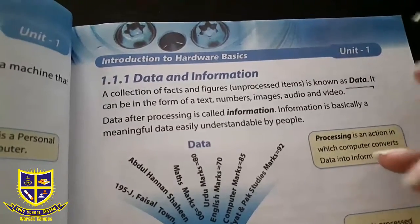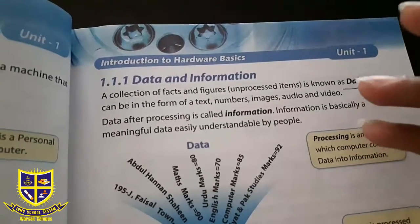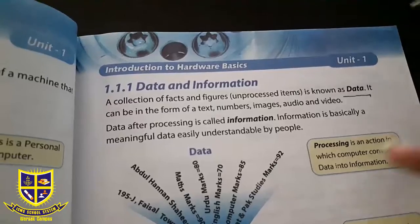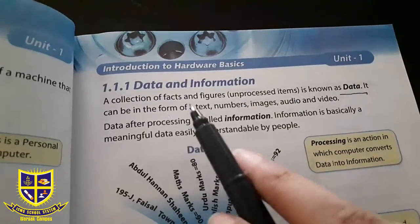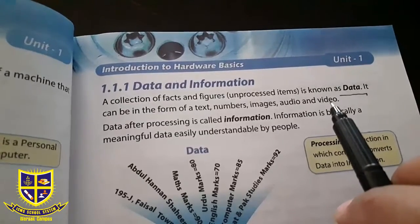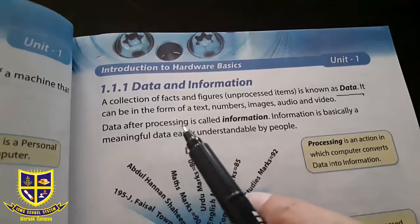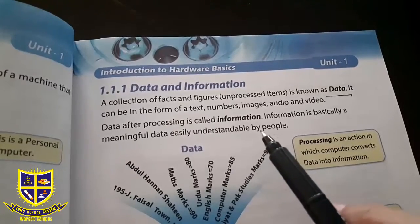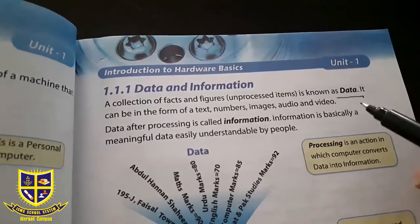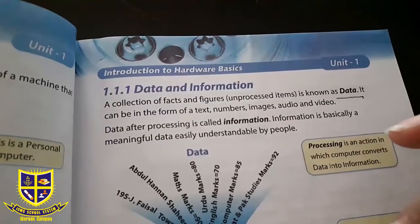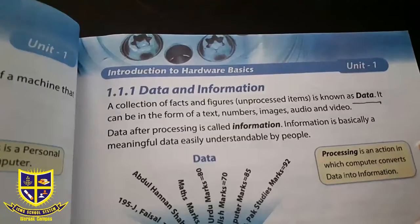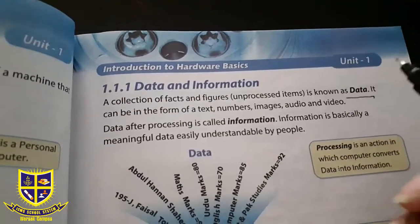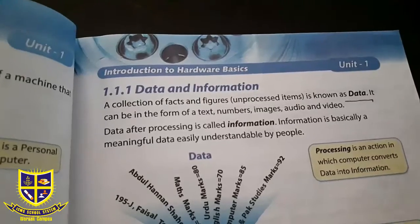Data is an unprocessed item — जिस पर कोई भी काम नहीं हुआ हो, जो process में नहीं आई। यह raw form में होता है। Data can be in the form of text, numbers, images, audio, और video। جس کے اوپر کوئی بھی کام نہ ہوا ہو، ایسی چیز جو ہم computer کو command دینے والے ہوں۔